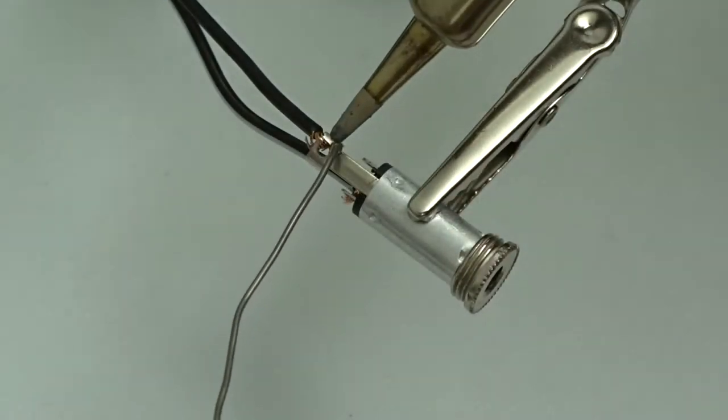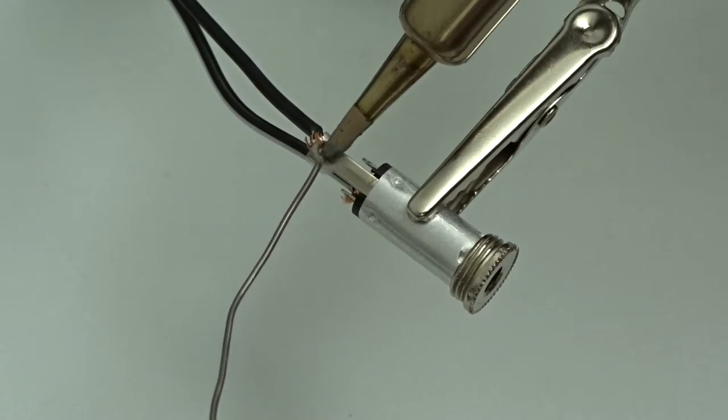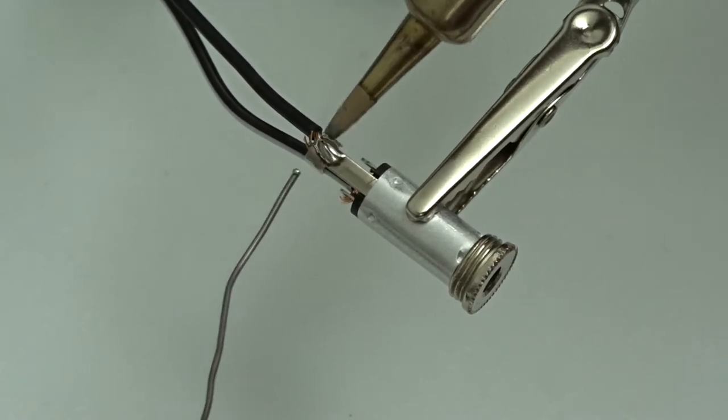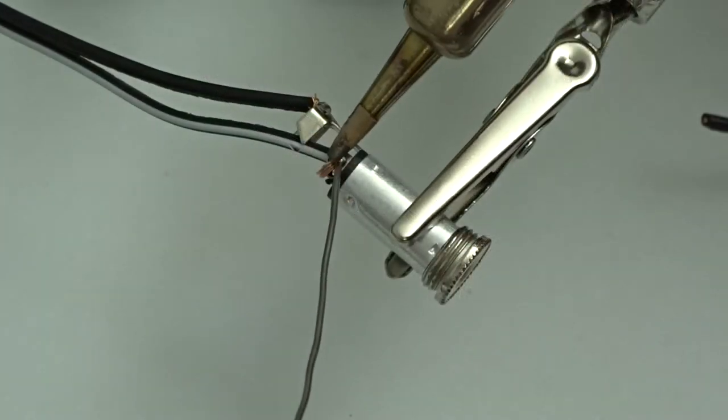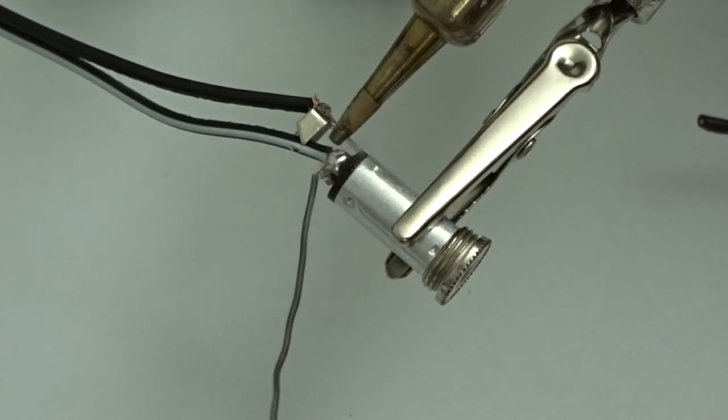To solder the wire to the post, hold the tip of the soldering iron and the end of the solder to the point where the wire and the post connect. Using as little solder as necessary, completely cover the hole in the post.